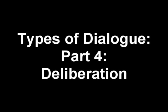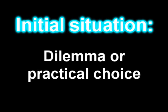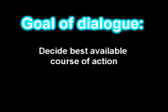Types of Dialogue, Part 4: Deliberation. In this video, we're going to talk about deliberation. The initial situation is a dilemma or personal choice. The participant's goal is to coordinate goals and actions. The goal of the dialogue is to decide the best available course of action.